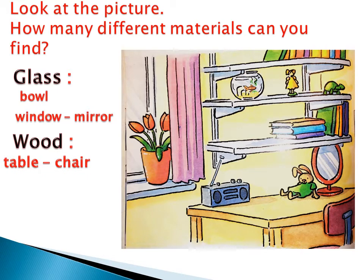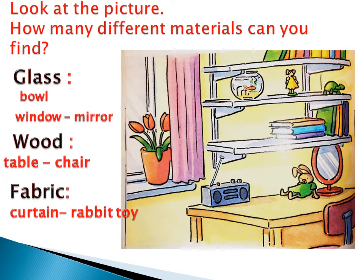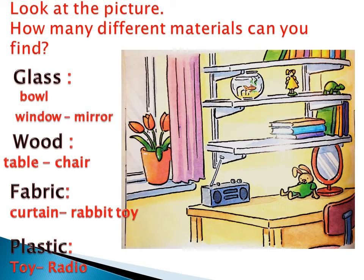Can you name another material? Fabric, like the curtain and the rabbit toy — they are made from fabric. And some are made of plastic, like the turtle toy and the girl toy, and the cover of the radio is made from plastic. There are also other materials like metal — the shelves are made from metal.